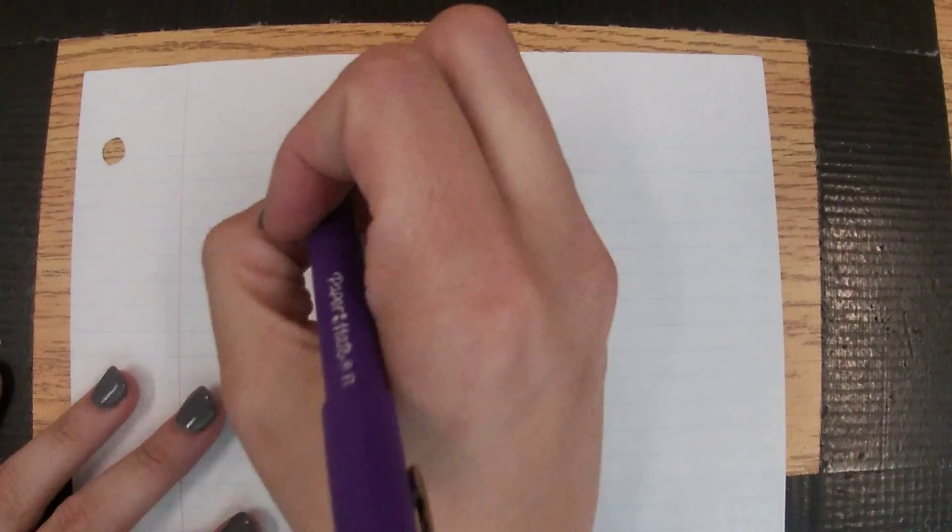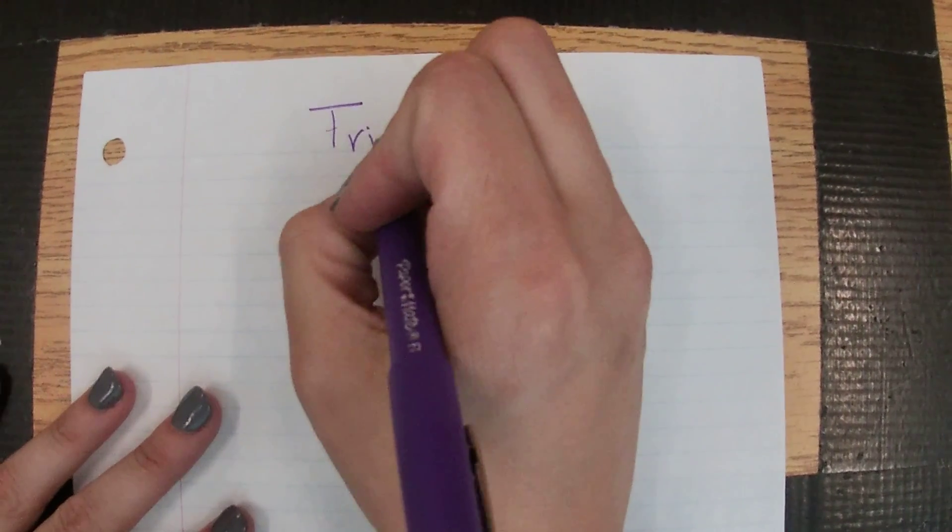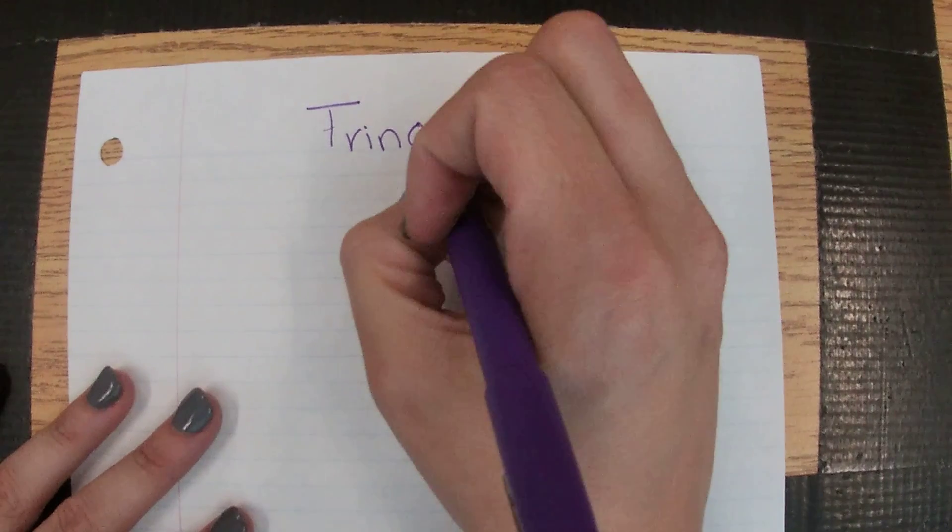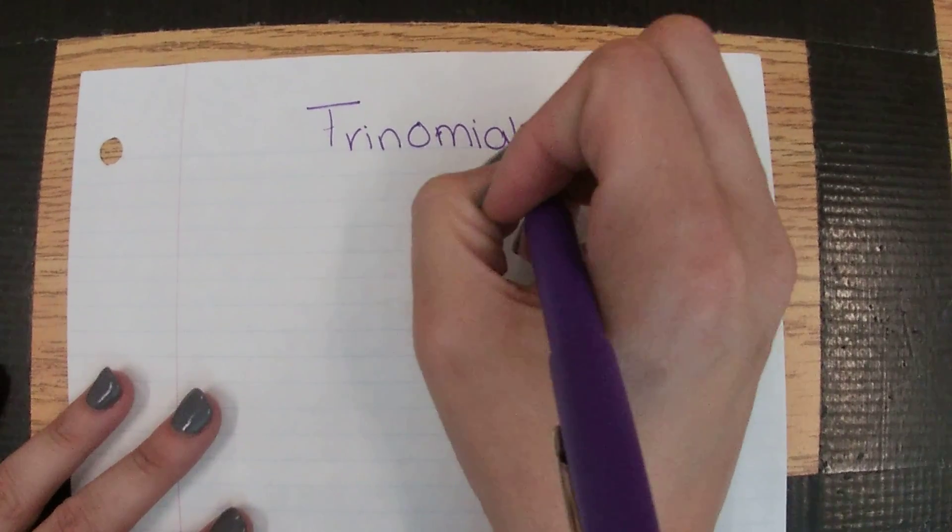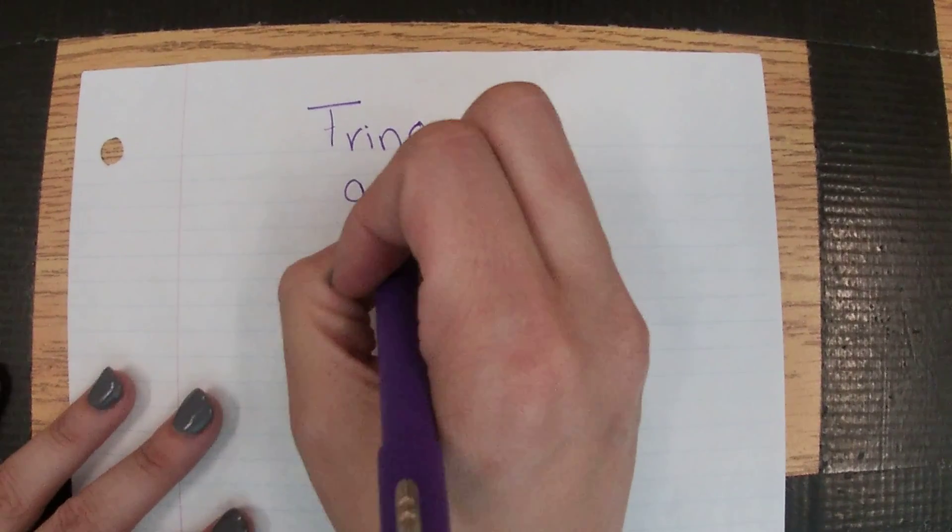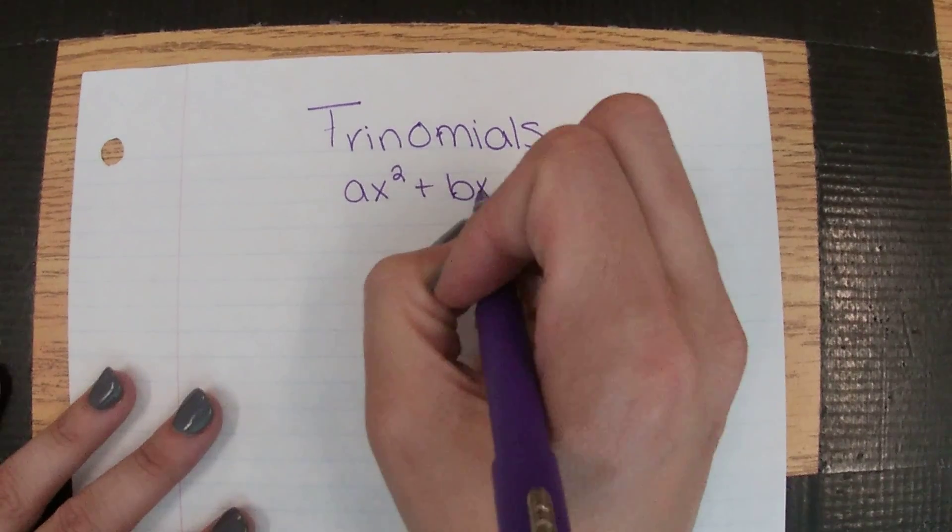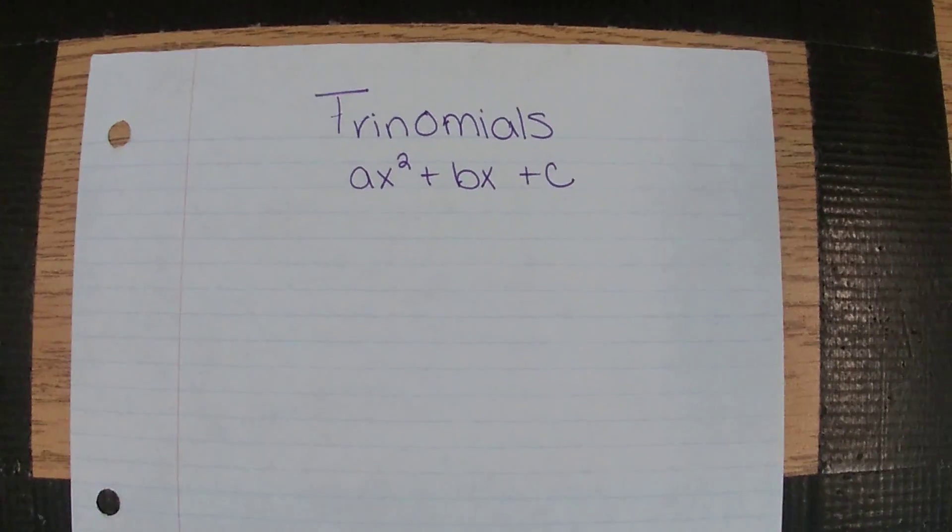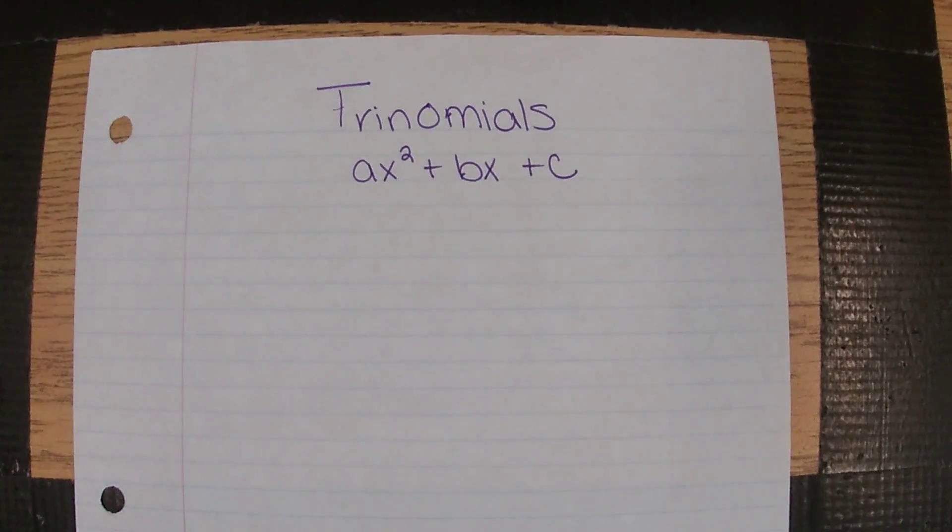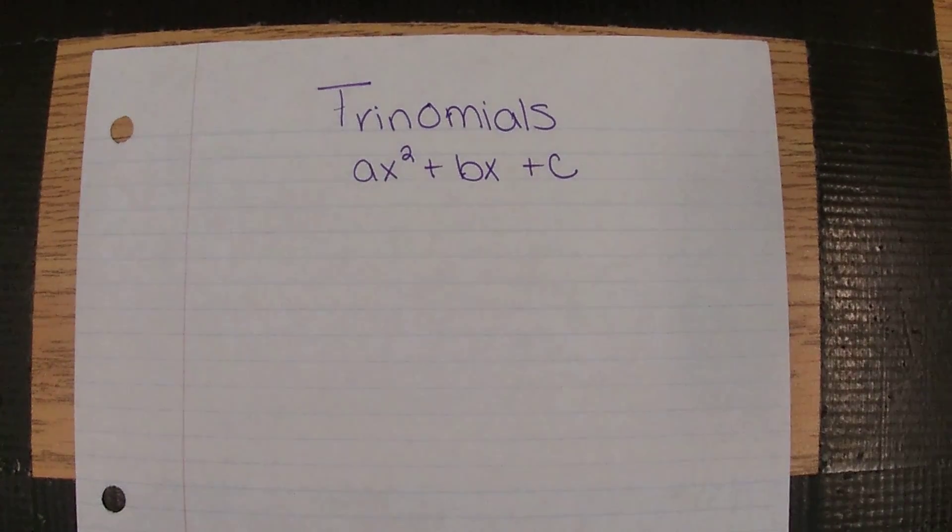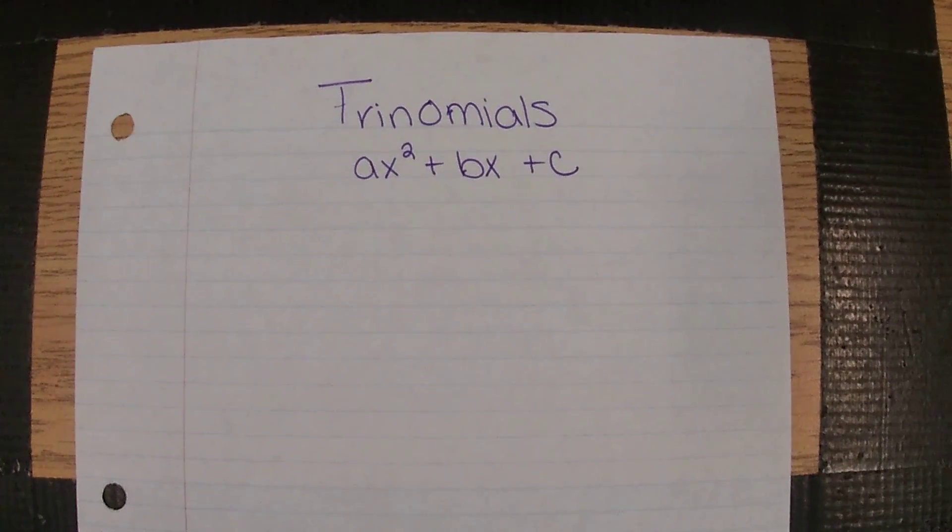Today we are going to continue with factoring trinomials. We are still looking at three terms in the form ax² + bx + c. We are still talking about the exact same steps, so the process doesn't change. If you knew the process yesterday, you'll be fine today.